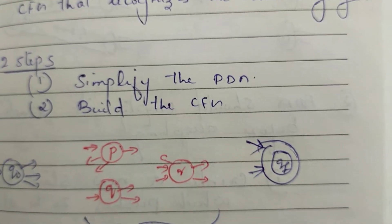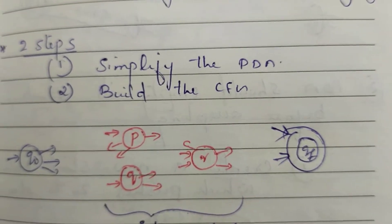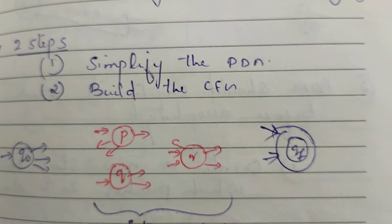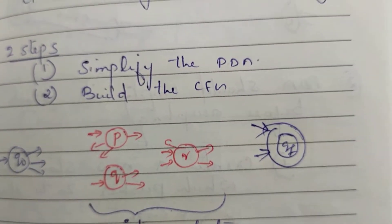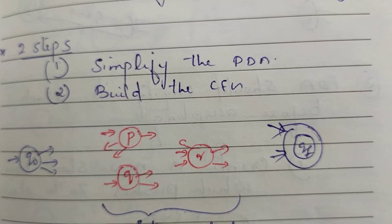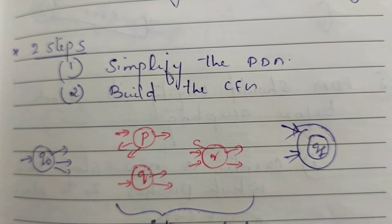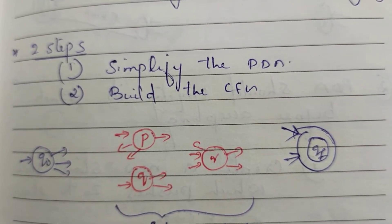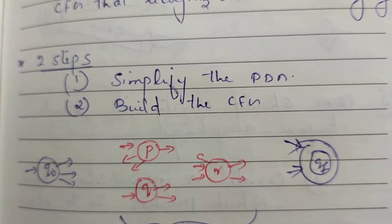There will be a non-terminal for every pair of states. Now, if we have PQ, we have a state called PQ.